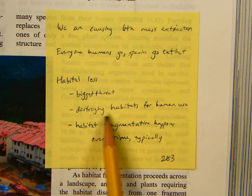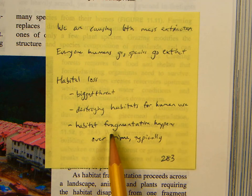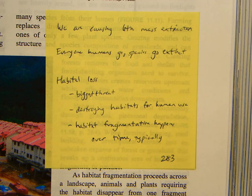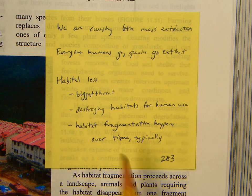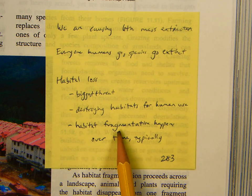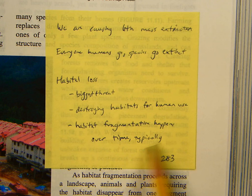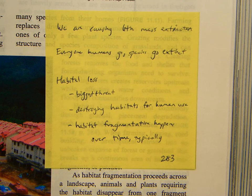Habitat loss destroys habitats for human use, and habitat fragmentation happens over time. Think of a new development going in — in places like Tacoma, University Place, or Puyallup — they'll make little parks, and that's habitat fragmentation. Typically this is an over-time kind of thing as communities develop, but these days in westernized nations it's done more on purpose.